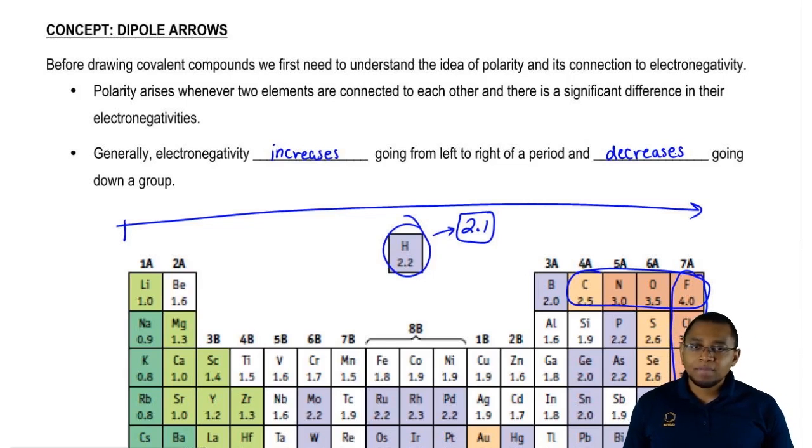Non-metals want to be negative because they want to become like the noble gases, therefore they have high electronegative numbers. Metals on the other hand like to lose electrons, so they don't like electrons as much, so their electronegative numbers would be lower.